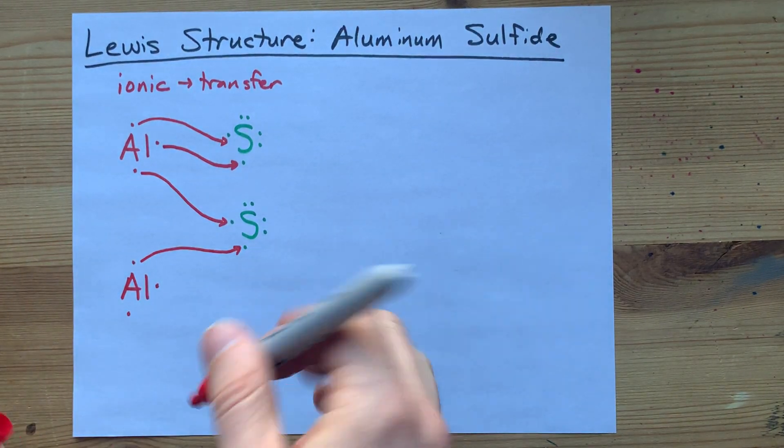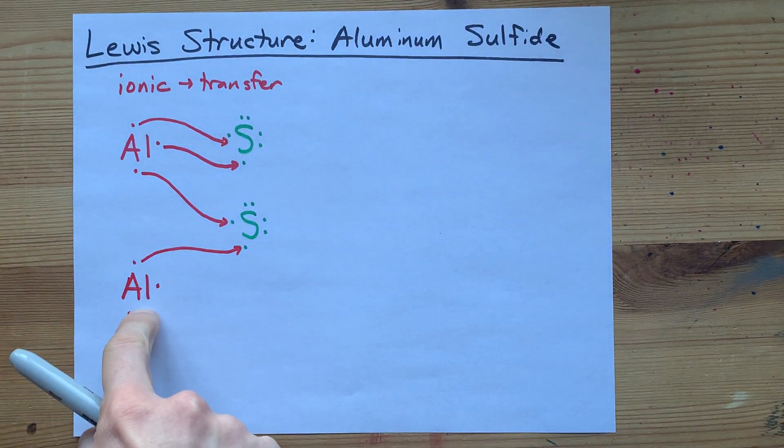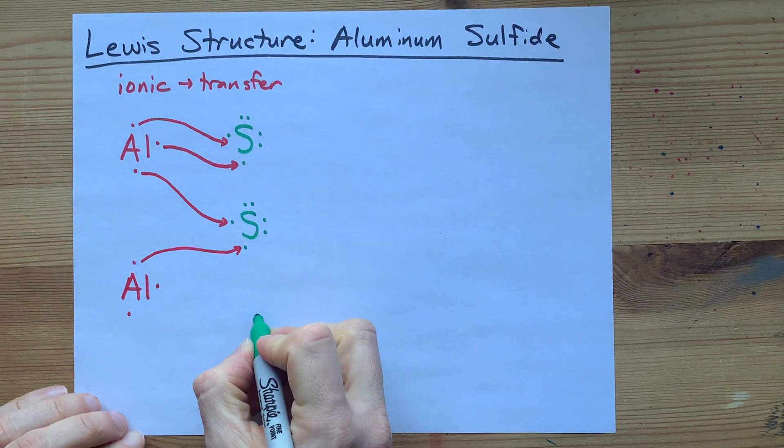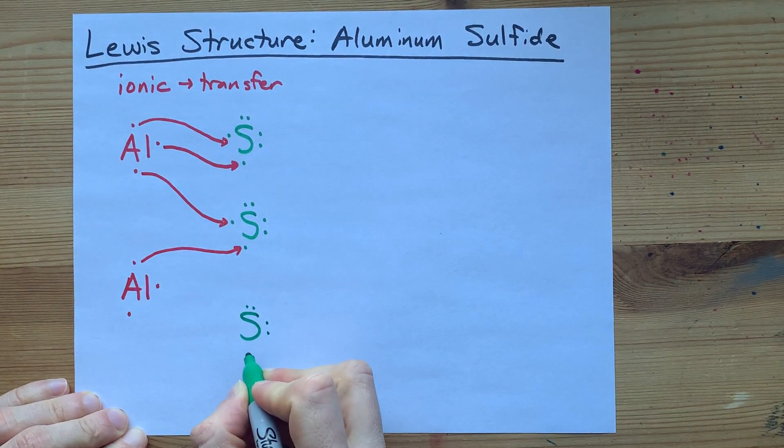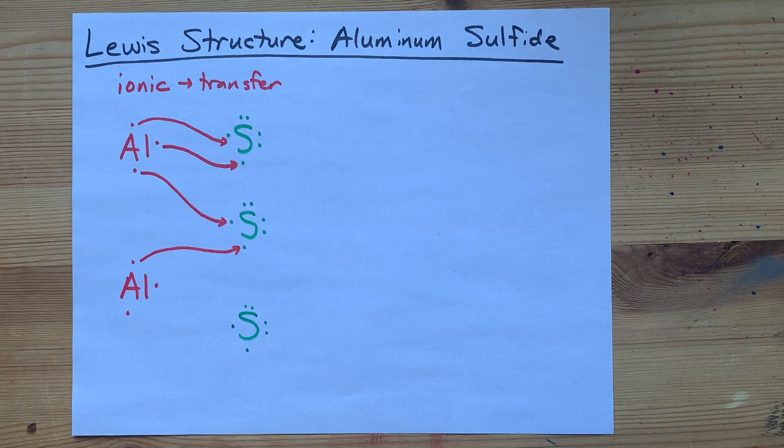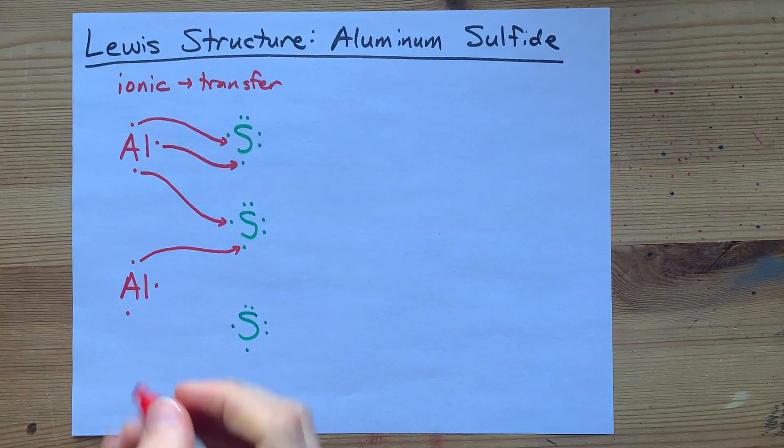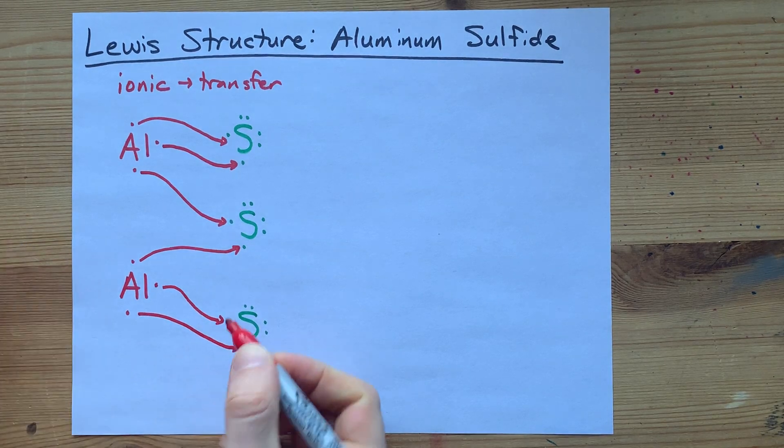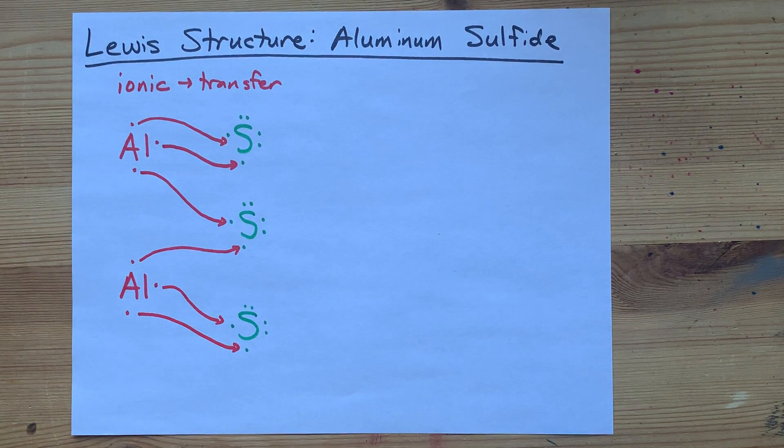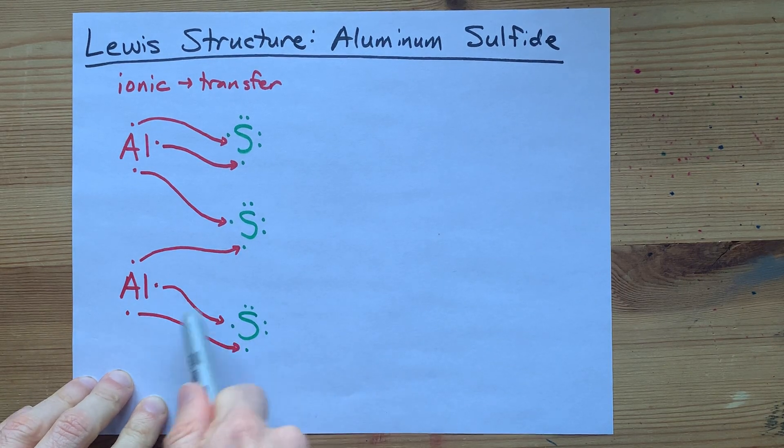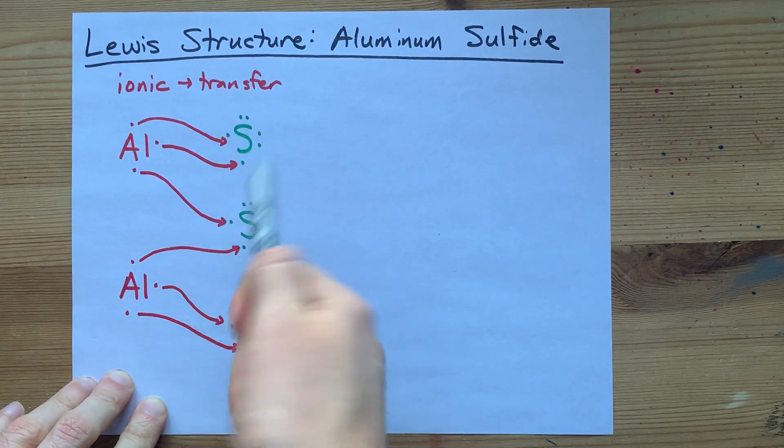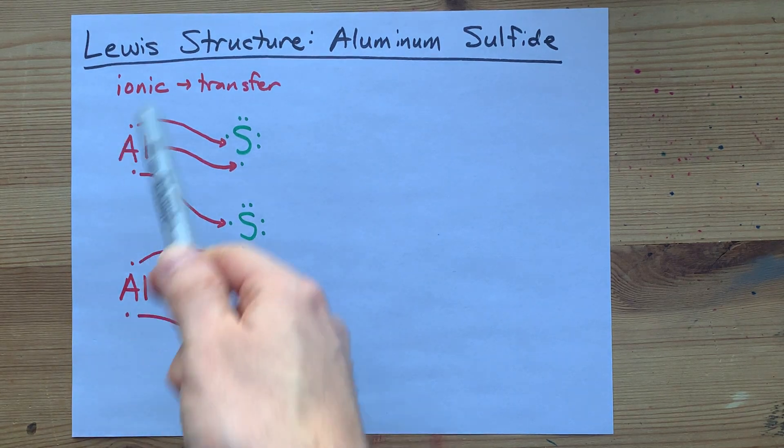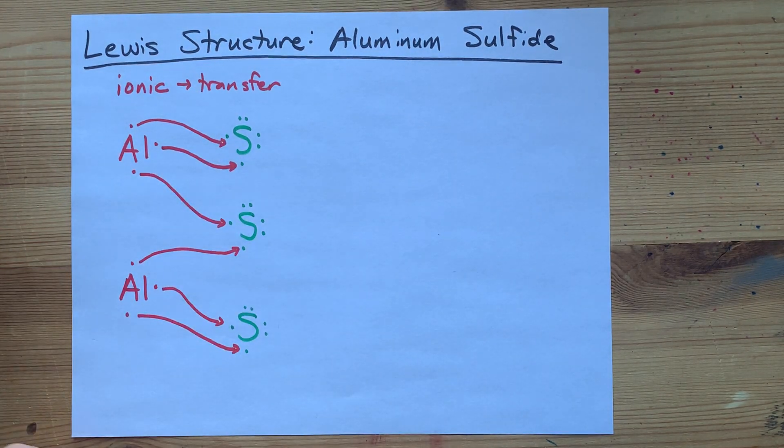Now, we're almost there, but this aluminum has two extra electrons to give away. So, a third sulfur with six valence electrons can accommodate exactly two more electrons. One, two. Oh, yes. Now we have all of our sulfurs gaining two electrons each to become stable, and each of the aluminums giving away three electrons each to become stable.